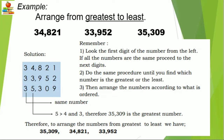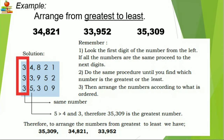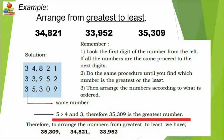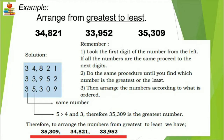Let's try to arrange from greatest to least. Write down the given numbers, then look at the first digit from the left. If all the numbers are the same, proceed to the next digits. Do the same procedure until you find which number is the greatest or the least. Then arrange the numbers according to what is ordered.